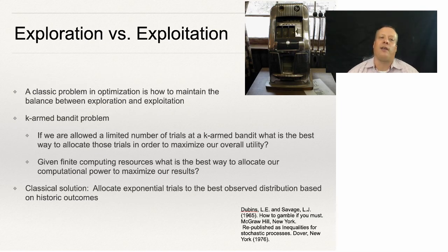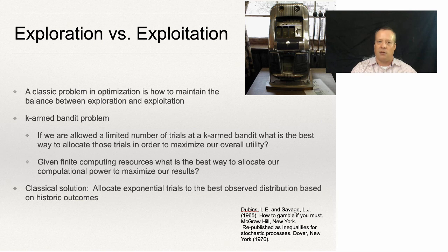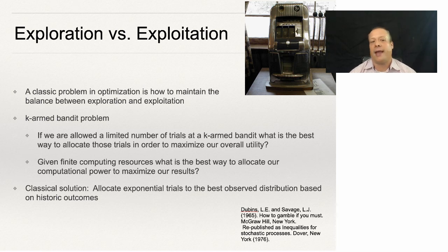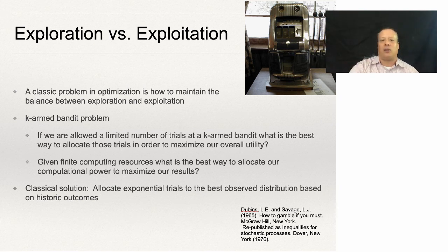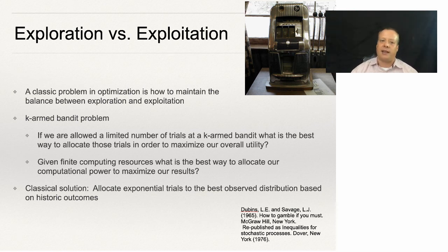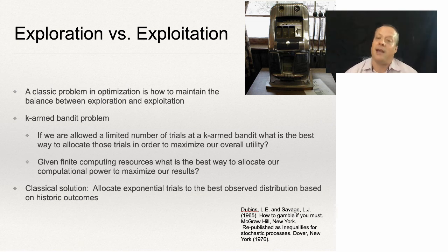Another way to think of it is that GAs are solving the exploration versus exploitation problem — a classic problem in optimization. How do you maintain the balance between simply using the best solution found so far, or continuing to evolve it in very minor ways, which is exploitation? Or do you explore for brand new solutions in places you've never seen before? This is epitomized by something called the K-armed bandit problem: if we're allowed a limited number of trials at a slot machine with not just one arm but K-arms, what is the best way to allocate our trials to maximize our overall utility? Given finite computing resources, what is the best way to allocate our computational power to maximize our results?